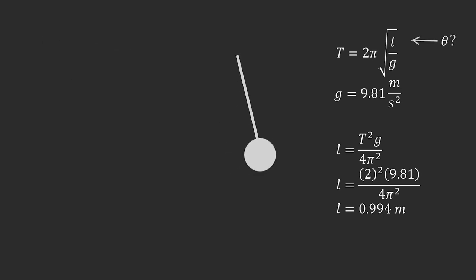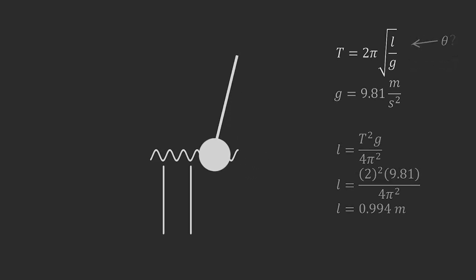You will notice how the maximum angle does not influence the period. This means the period will be the same even if the maximum angle is reduced. There is also no influence of the mass on the period. This system should work really well. The pendulum would pass the zero line twice every period, so that is once every second.